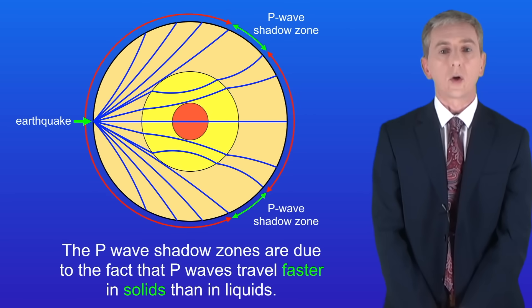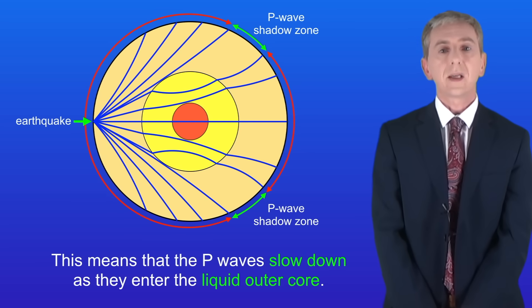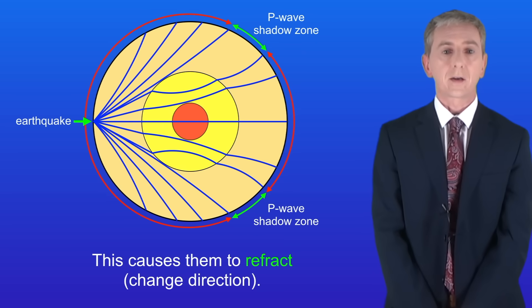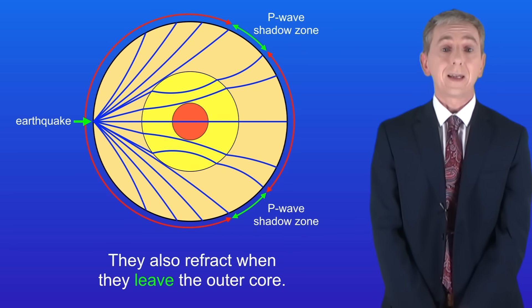The P wave shadow zones are due to the fact that P waves travel faster in solids than in liquids. This means that the P waves slow down as they enter the liquid outer core. This causes them to refract, in other words change direction. They also refract when they leave the outer core.